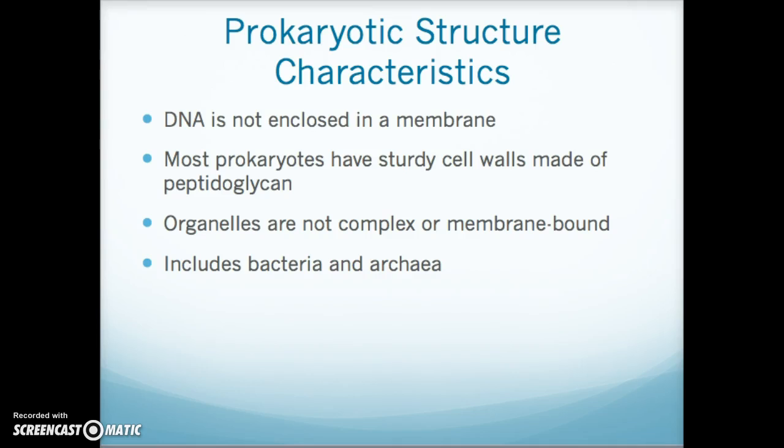When we look at prokaryotes or prokaryotic cells, we need to remember that the DNA is not enclosed in a membrane — that is what differentiates them from eukaryotes. Most prokaryotic cells have sturdy cell walls made up of peptidoglycan, which gives them their structure. When we look at bacteria, we look at how they react to dyes and whether they're gram positive or gram negative, and it's because of these cell walls that we can differentiate bacteria.